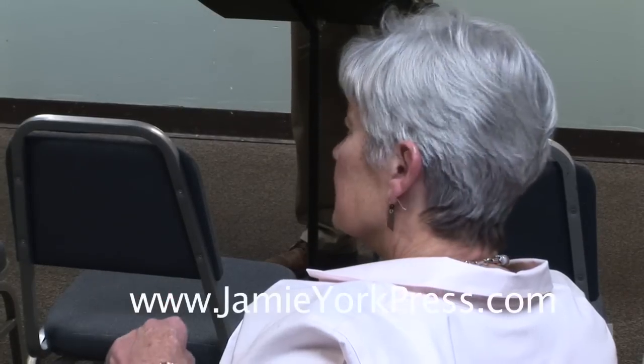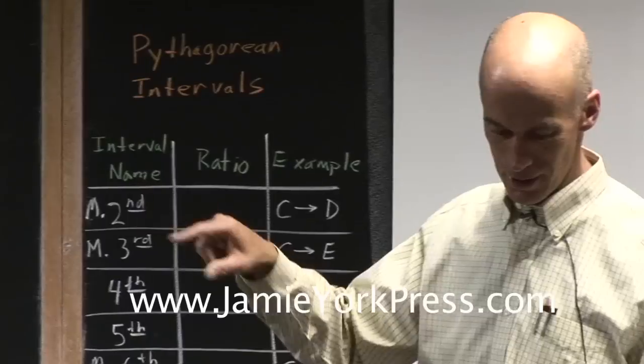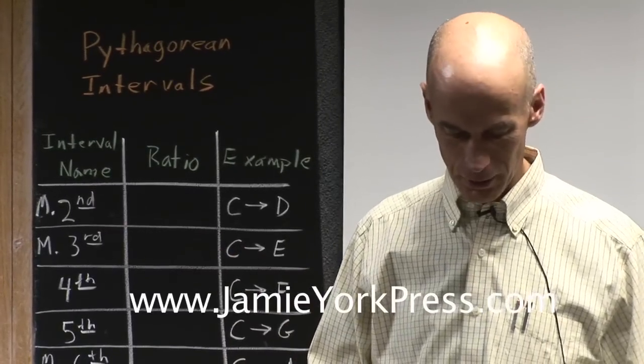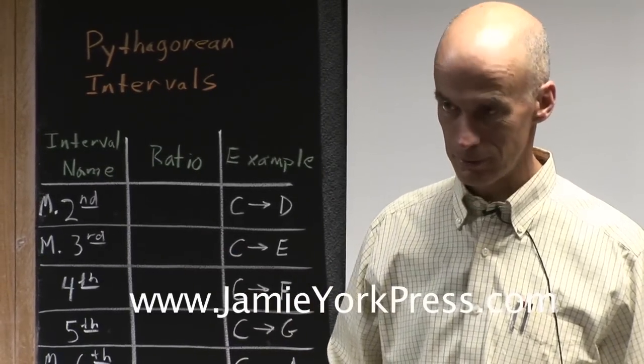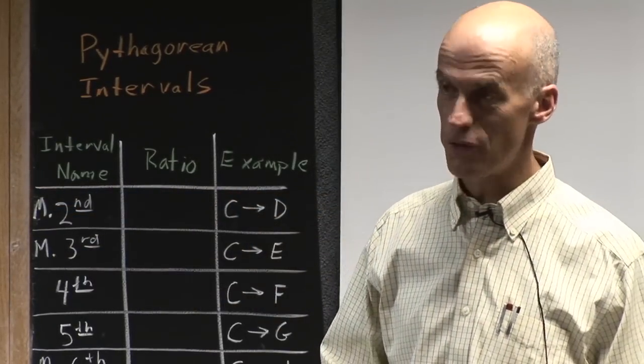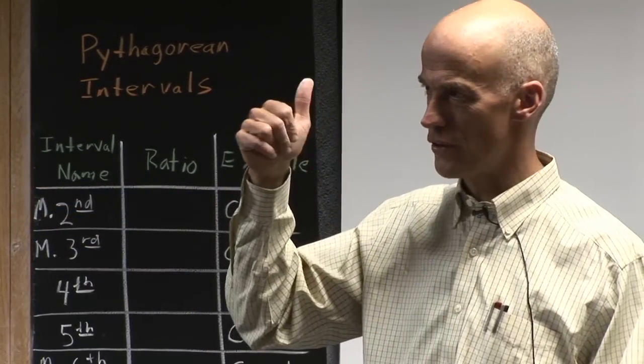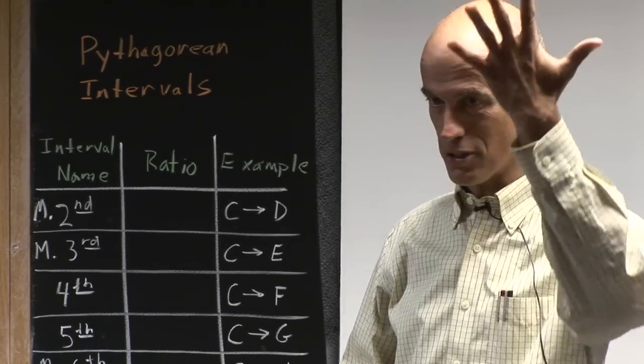The first exercise is on the A string, be it a cello or a violin. On the A string, I would like you to play the open A. You'll measure the length of the whole string, and you will do the fifth above. The fifth above an A is A, B, C, D, E, that's going to be the E.